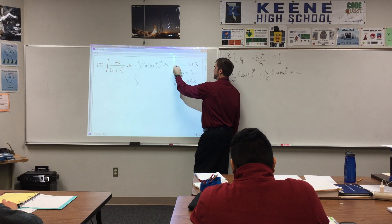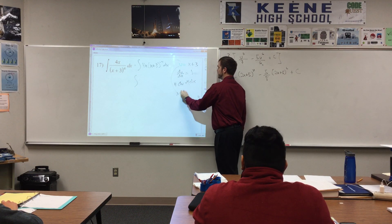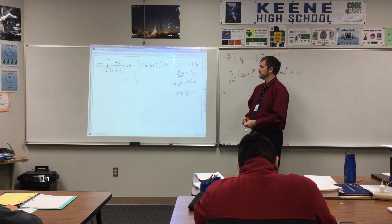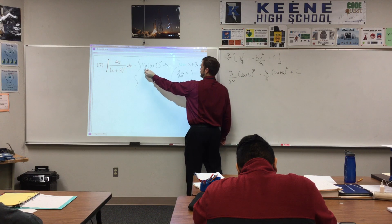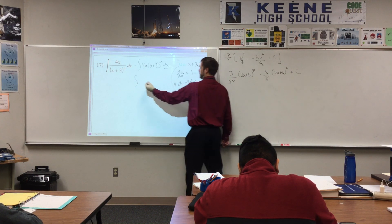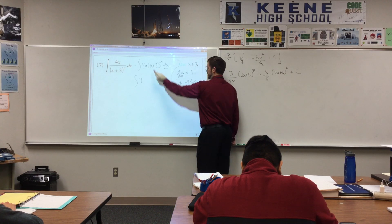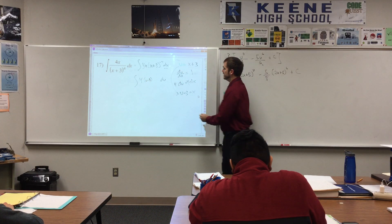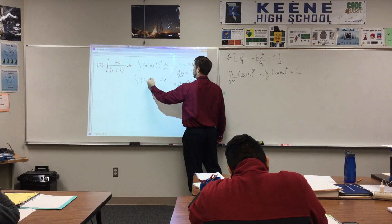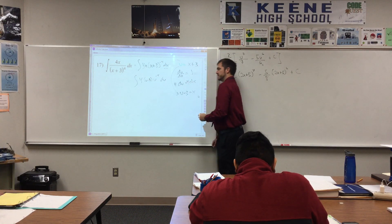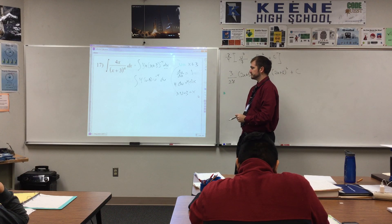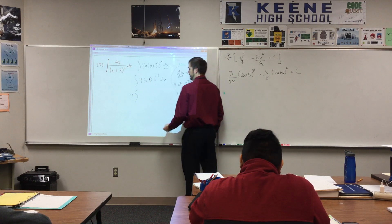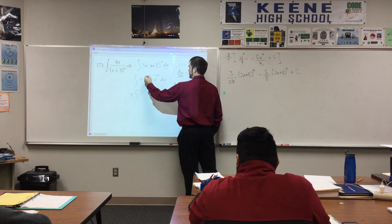And then we will solve for x. That's not too bad here. u minus 3 equals x. Alright, so the 4 dx is taken care of with a 4 du. The x is replaced with u minus 3, and the x plus 3 to the negative fourth is replaced with a u to the negative fourth.